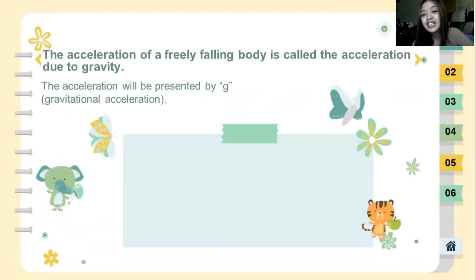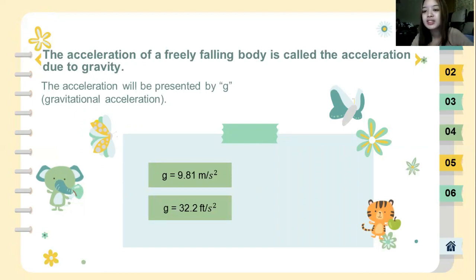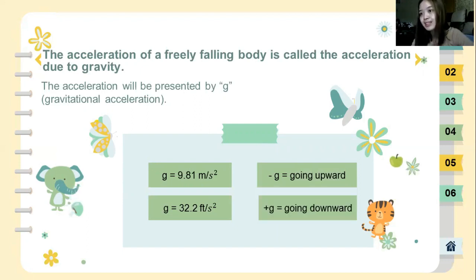The acceleration of a free falling body is called acceleration due to gravity. The acceleration will be presented by g, known as gravitational acceleration. So we'll have 9.81 meters per second squared and 32.2 feet per second squared. If it's going upward we're going to have negative, and if it's going downward we're going to have positive.